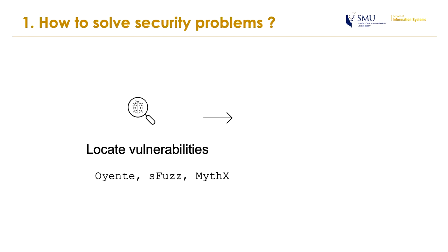Because smart contracts are subject to vulnerability, how do we achieve a safe smart contract deployment? The general workflow is to first scan our smart contract with a variety of open source security tools such as Argente or Adverse. Whenever a bug is discovered, we manually fix it and scan again to make sure no bug exists. After that step, the smart contract is safe for deployment.